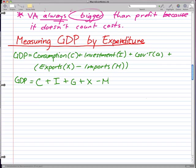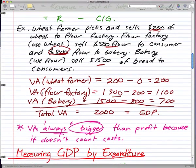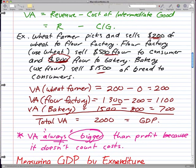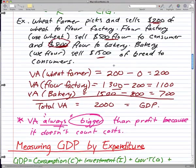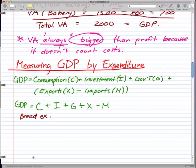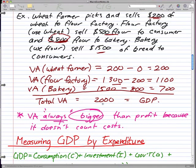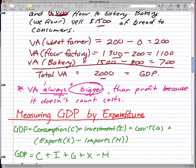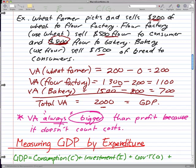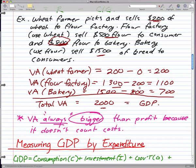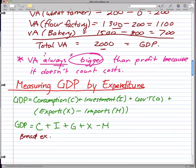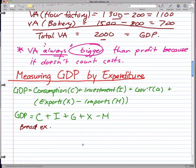That's what GDP equals. Now, from our bread example in the last video, remember that we as the customers bought $500 worth of flour and $1,500 worth of bread, so in total we bought $2,000 worth of goods. Using this formula, we're going to get the same answer — $2,000. We calculated $2,000 through the value added process in the last video, and in this video I'll show you how we can use this new formula to get the same answer.